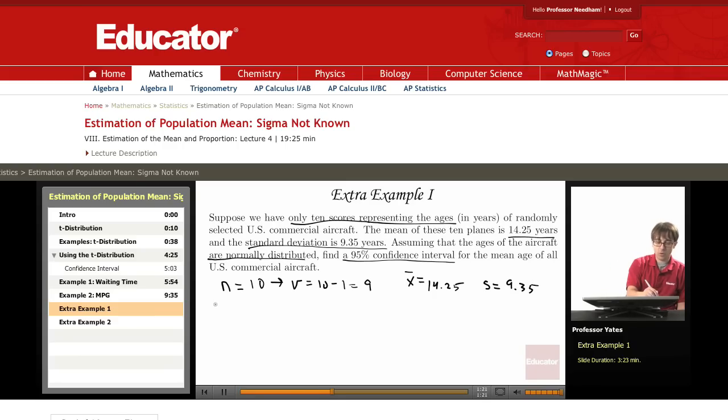Now, we're working with 95% confidence, so that means alpha is 0.05, but because I'm working with a confidence interval, I'm more concerned with alpha over 2, which is 0.025. So the equation that we're going to be using is X-bar plus or minus T of 0.025 and 9 degrees of freedom times S over the square root of N.